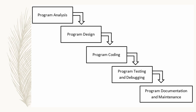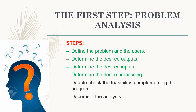For this lesson, we will discuss program analysis and program design. The first step in the program development process is problem analysis. In problem analysis, there are steps to follow: first, define the problem and the users; second, determine the desired outputs; third, determine the desired inputs; fourth, determine the desired processing; fifth, double-check the feasibility of implementing the program; and the last is to document the analysis.